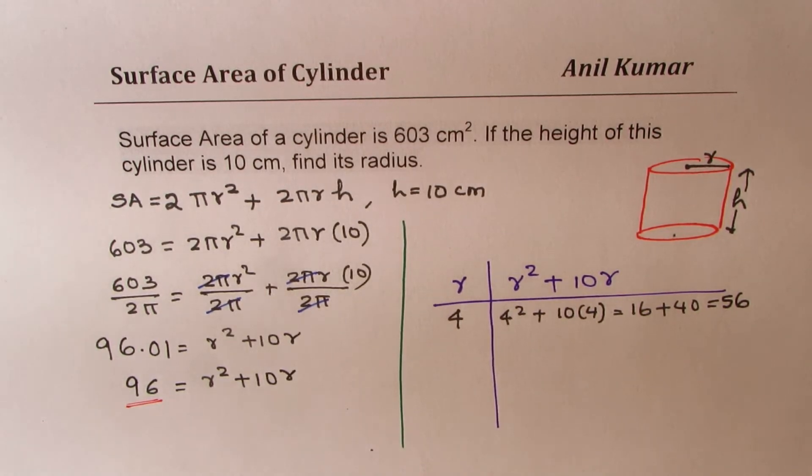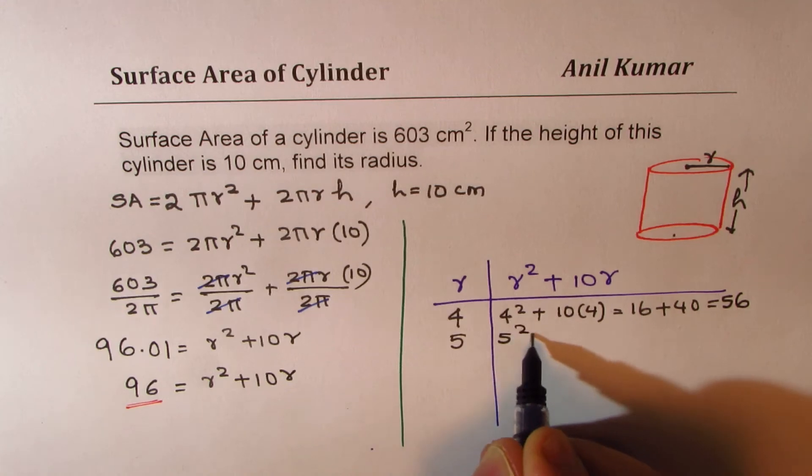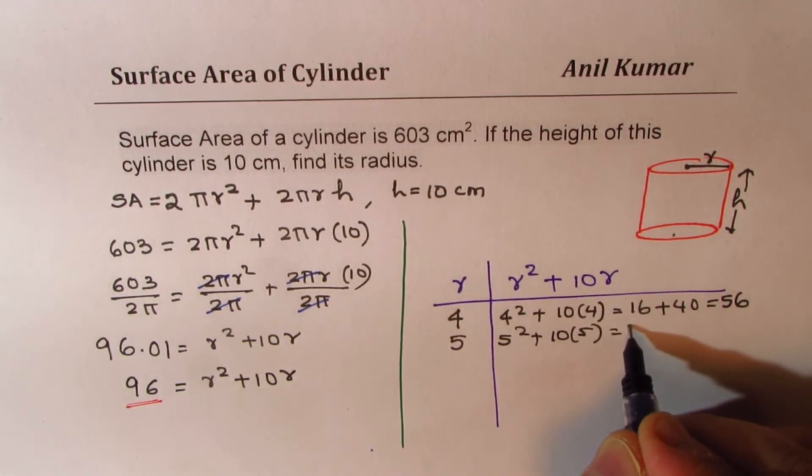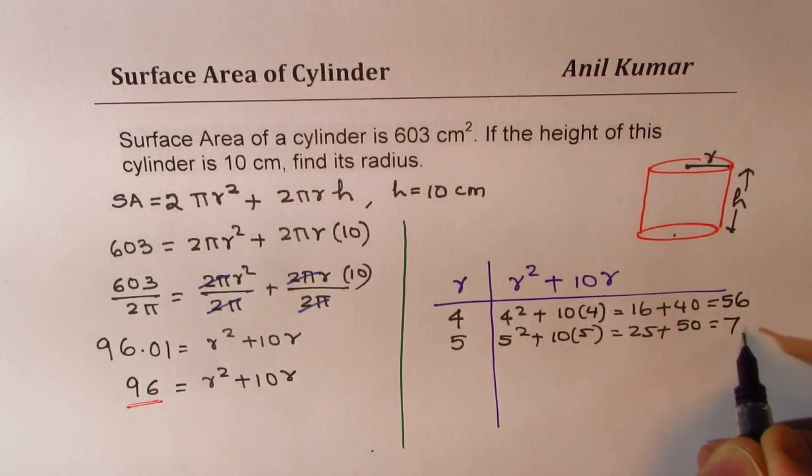So you can continue with this approach, that helps. If I use 5, I get 5² plus 10 times 5, which is 25 plus 50, and that is 75. We are closer to 96.